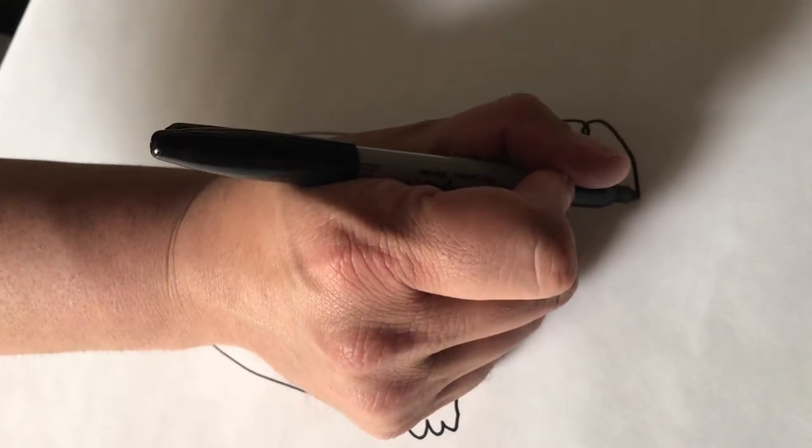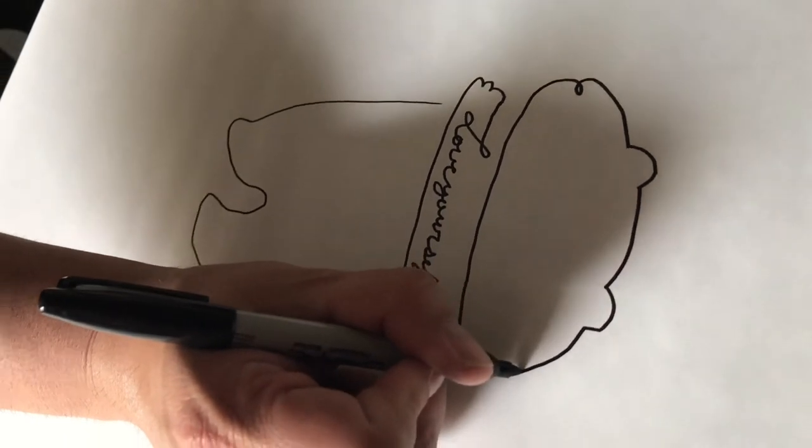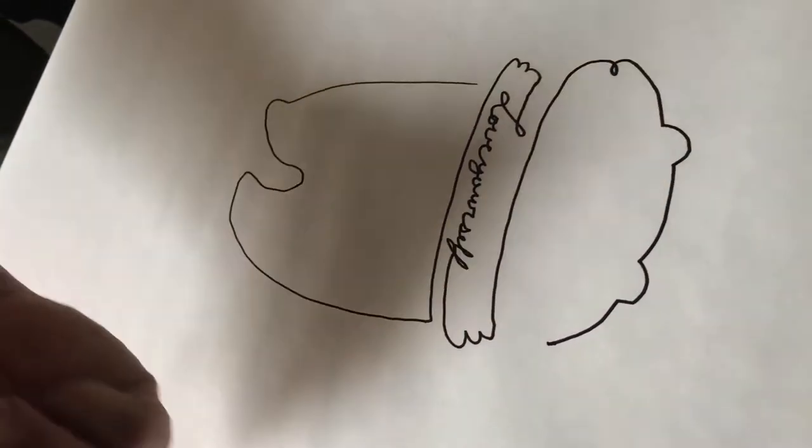Now we're going to create the ears. So come up a little bump right here and then come down. Now this is where you get to let go. So now you have it.